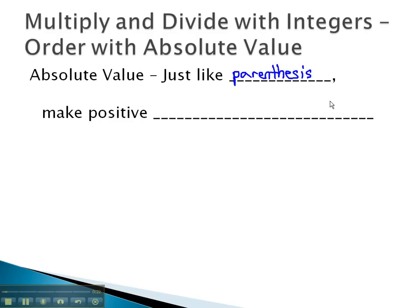In other words, we will simplify inside the absolute value first, and once everything has been simplified inside the absolute value, we will make it positive. We will make it positive after the inside is done. It's very important we don't make things positive until everything is simplified inside that absolute value.